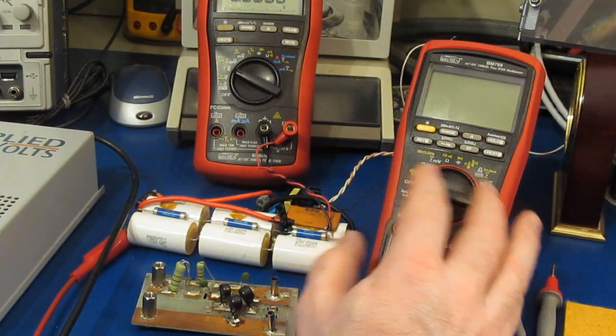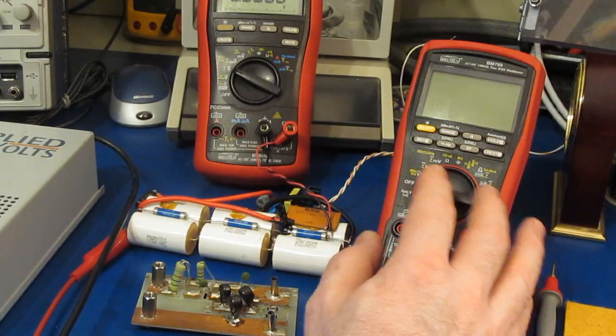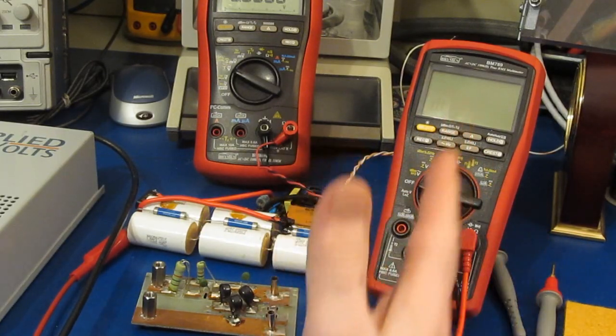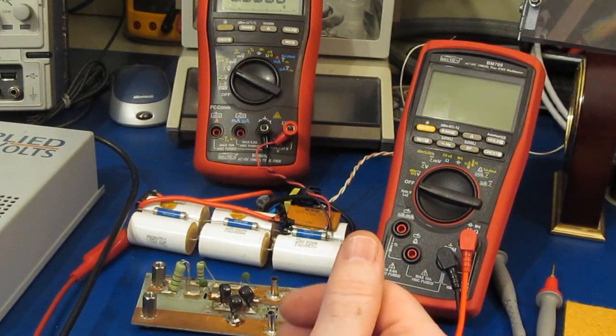And I would imagine most people don't have a way to measure where the MOVs start to conduct anyway, so you really aren't going to know if you're encroaching on that switch point or not. But most of the meters are going to clamp somewhere around 2,000 volts.